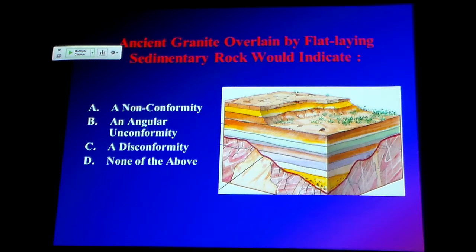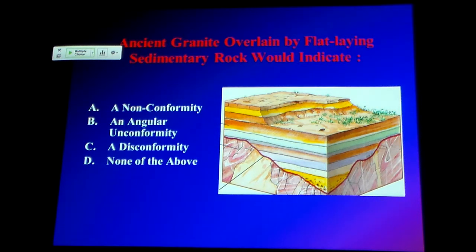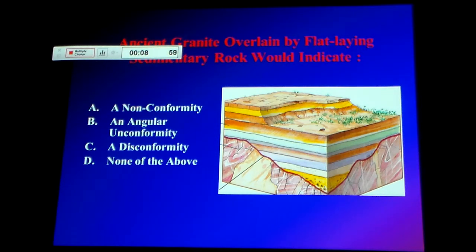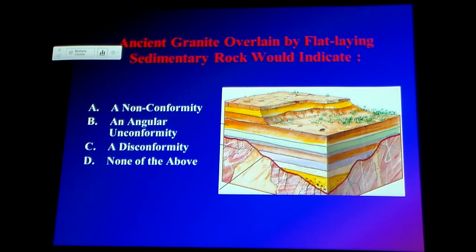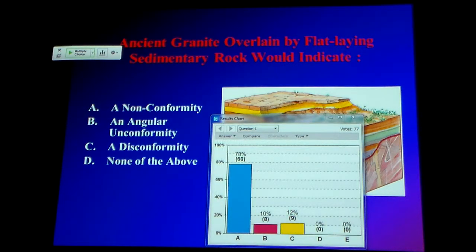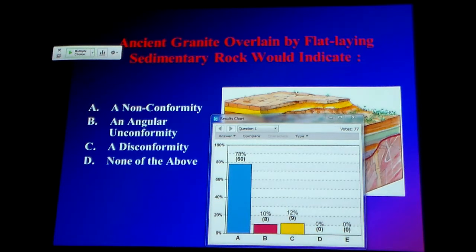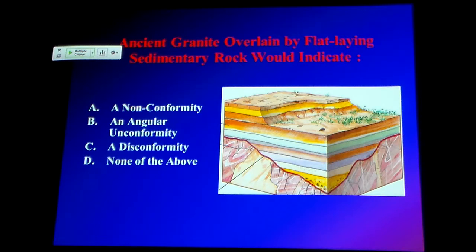Here's a clicker question — it might look familiar because we've already done it last time. Aged granite overlain by flat-lined sedimentary rock would indicate which of these types of unconformities? About 60 of us got it right and there were a few that didn't. For a repeat clicker slide, we probably should have all gotten it right. So if you didn't get it right, you might want to review this material because it's pretty standard stuff as far as what might show up on an exam.